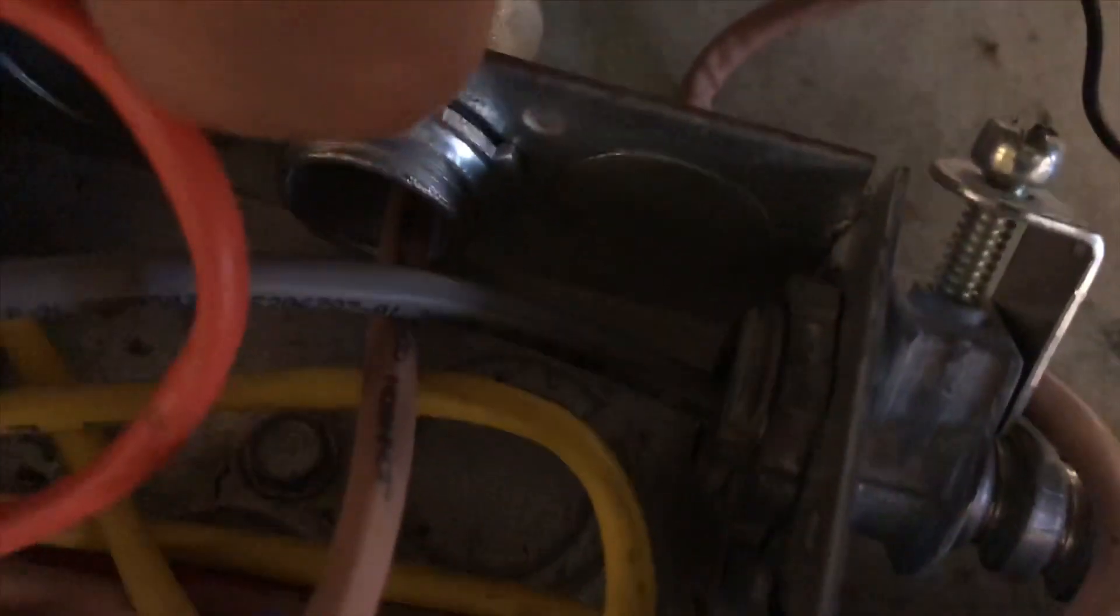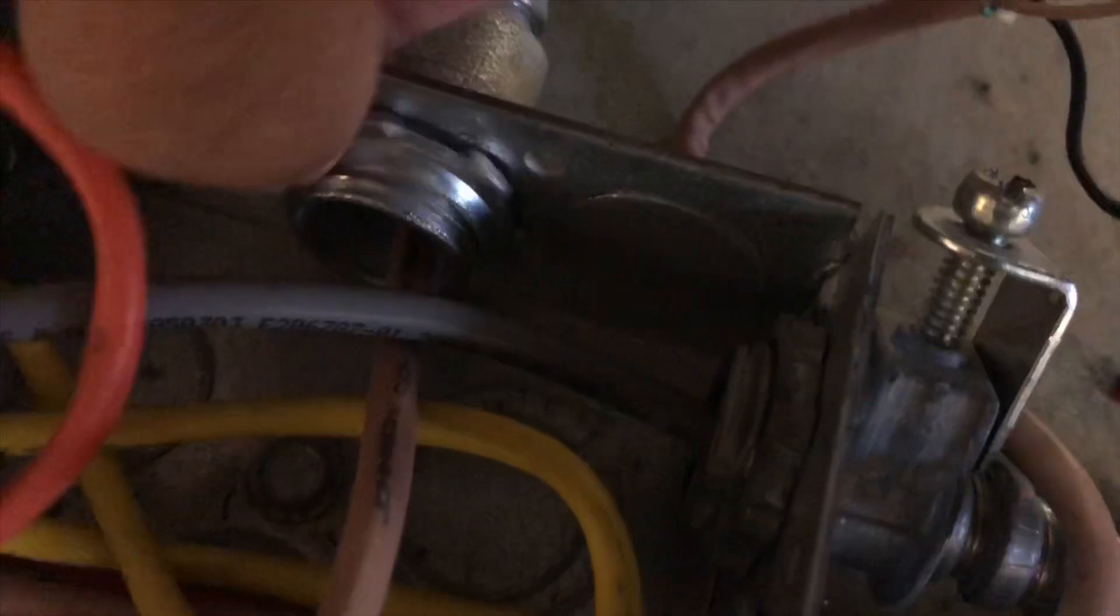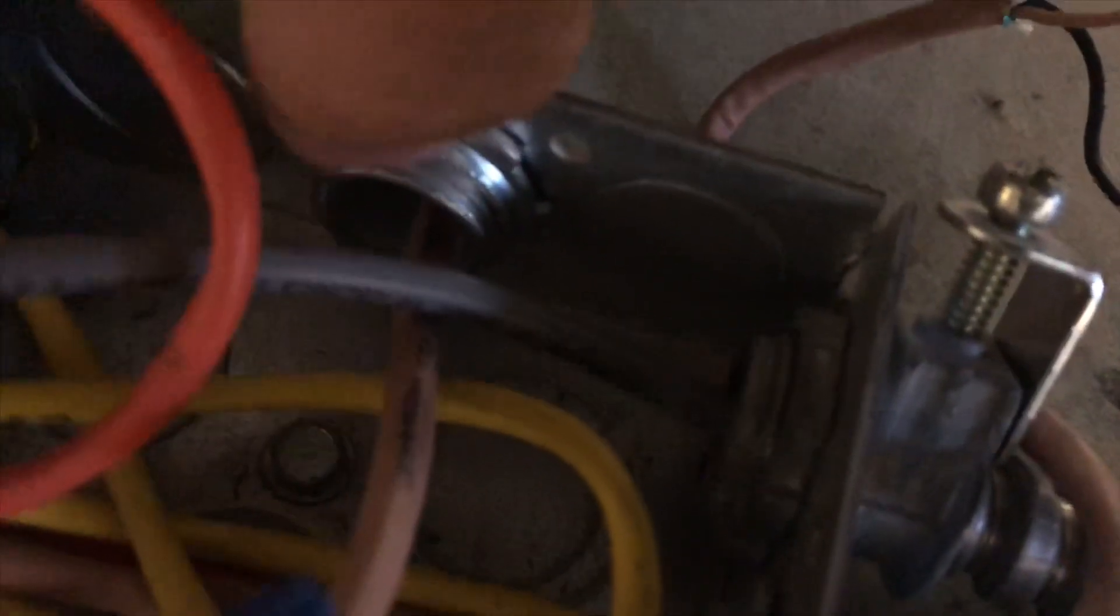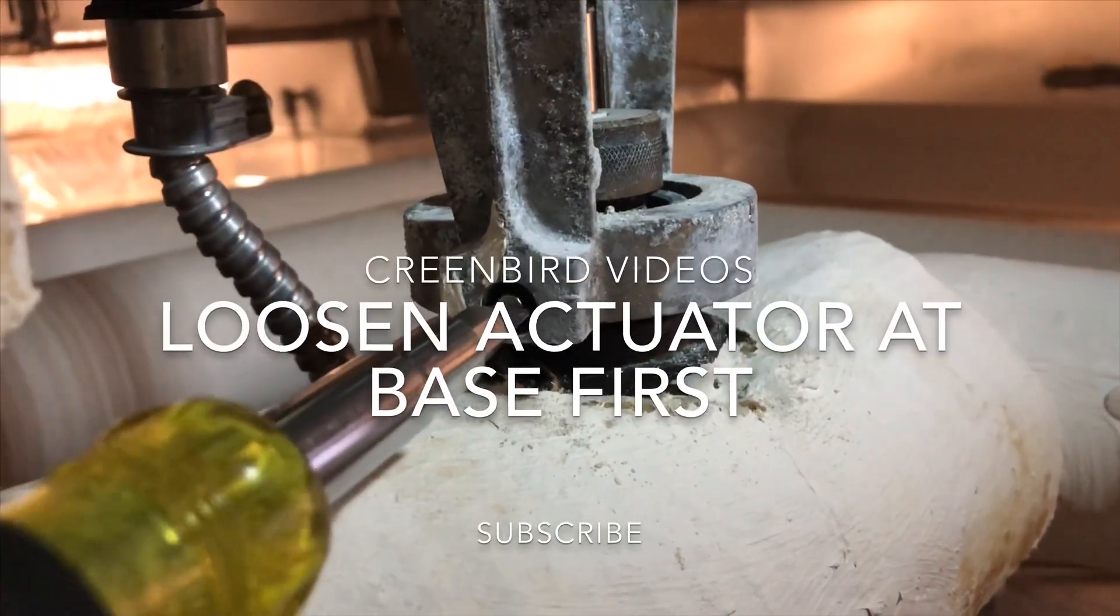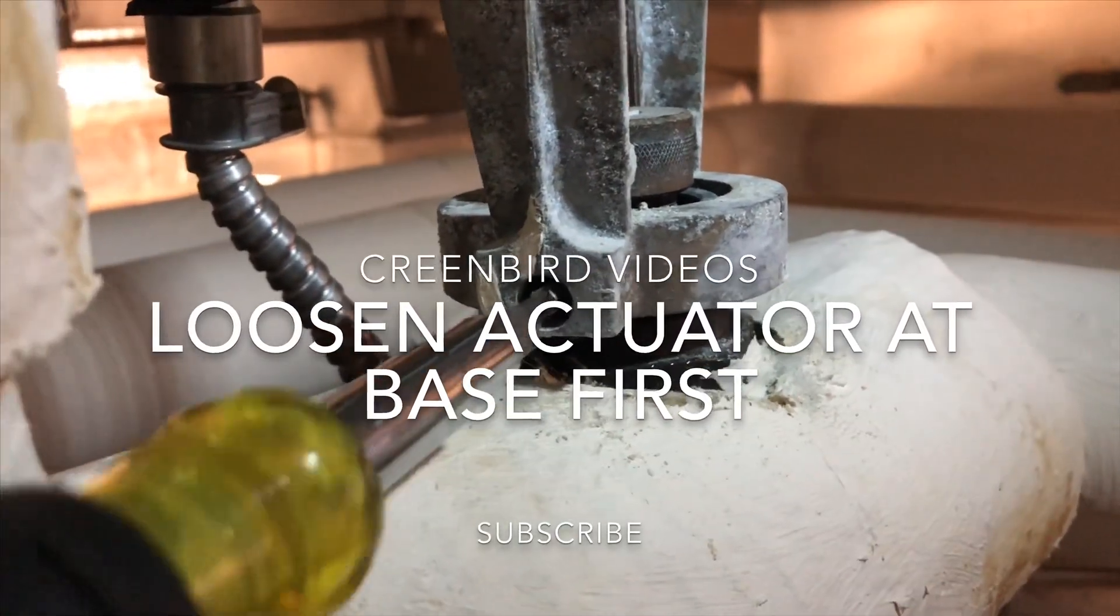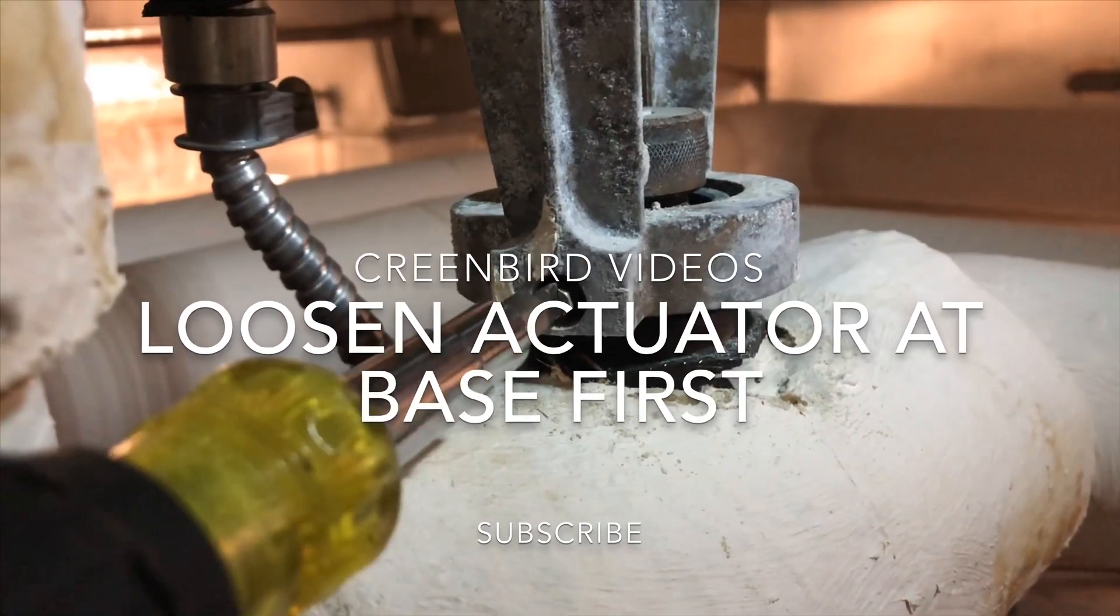Next, I'll unhook the armor flex going to the box because of where the location is of this actuator. I need to retrofit this to my new one. Next, I'm going to loosen the set screw that holds the old valve actuator to the valve.